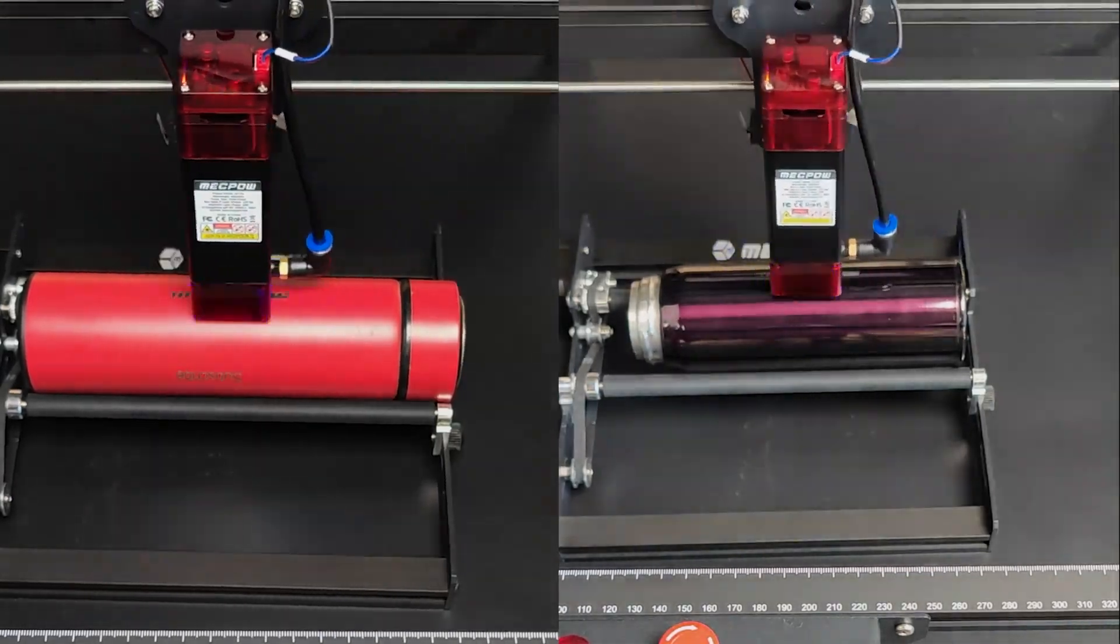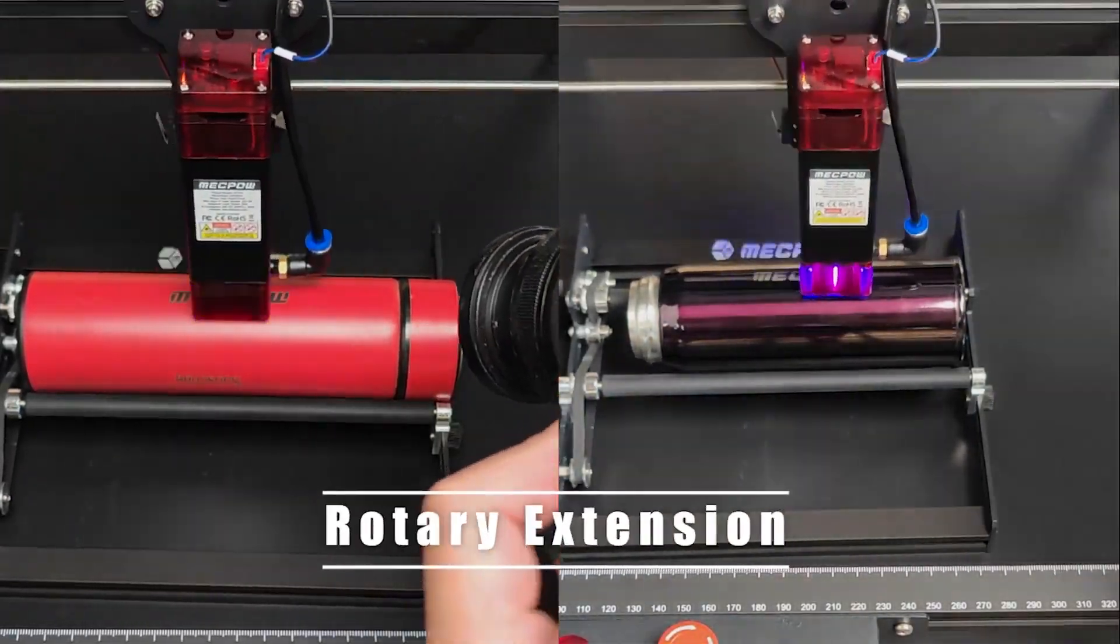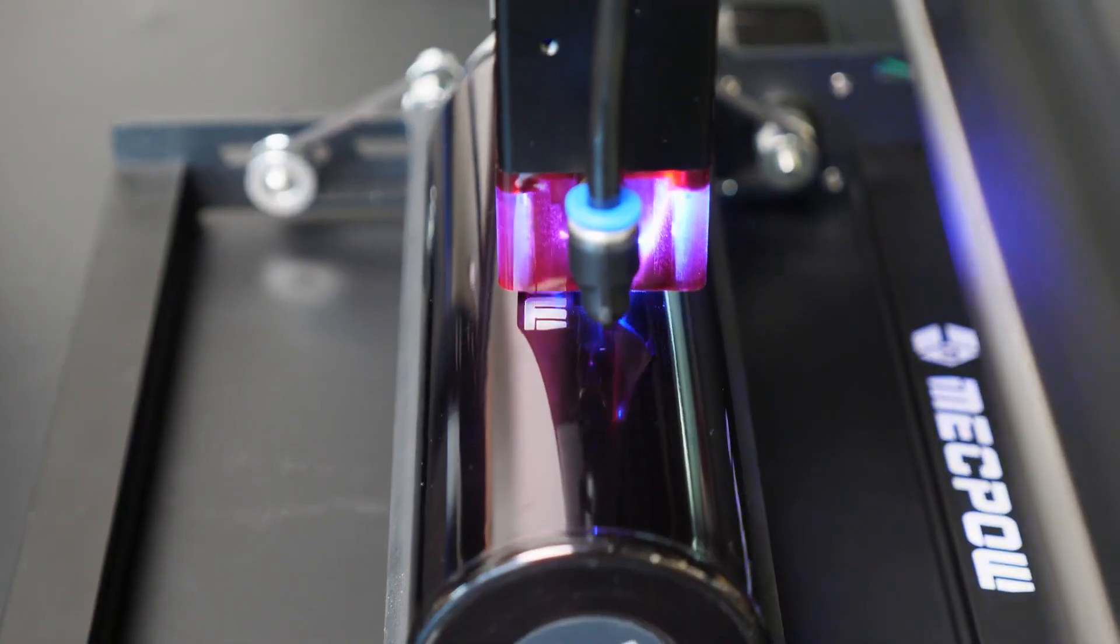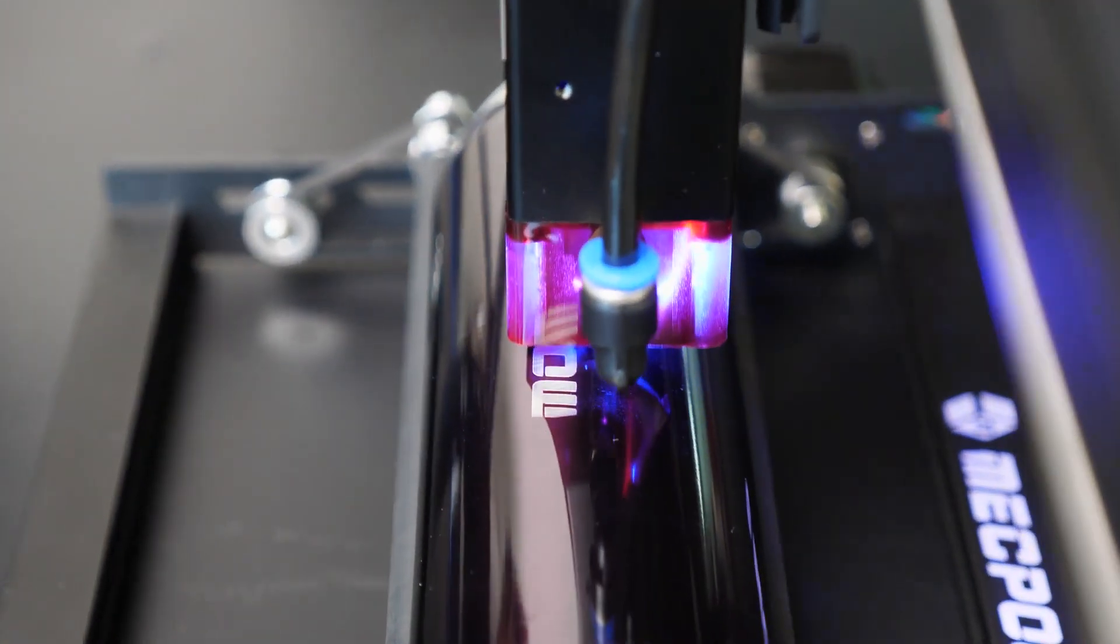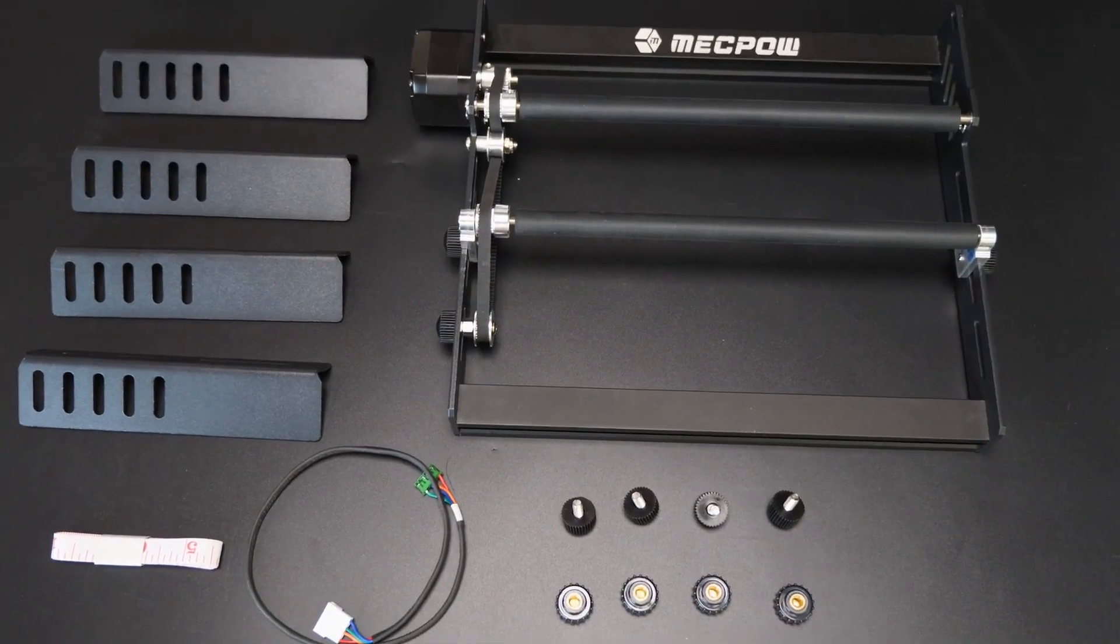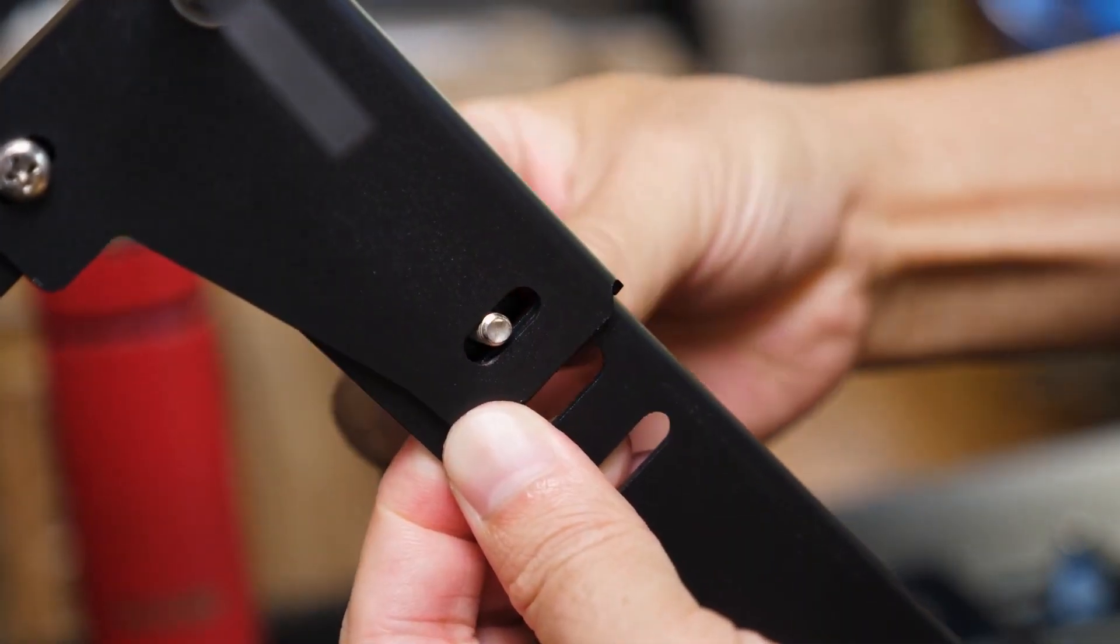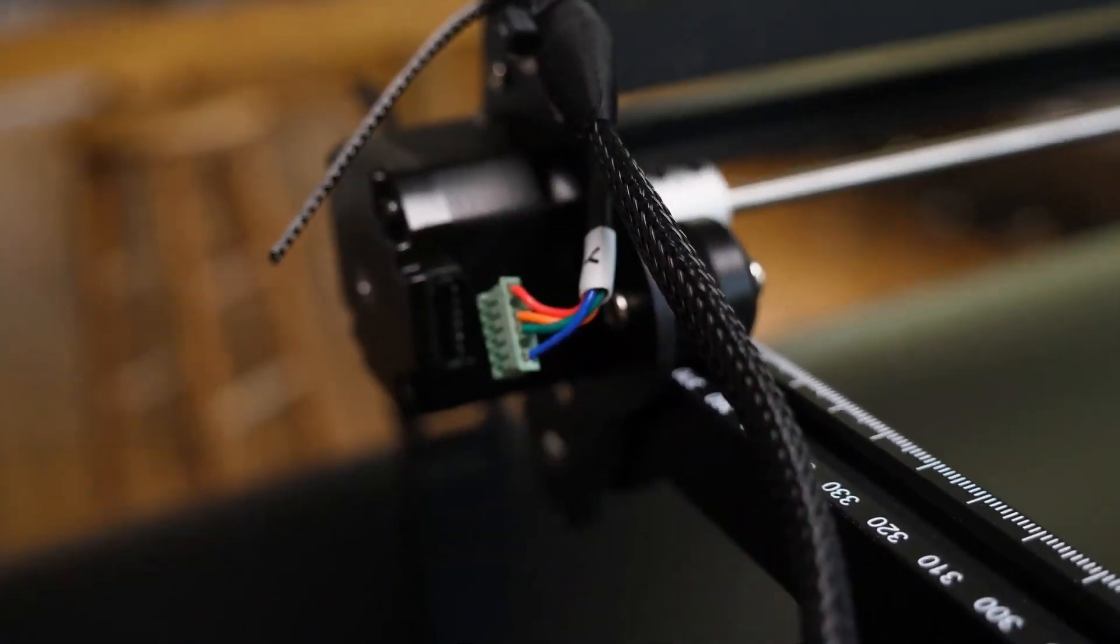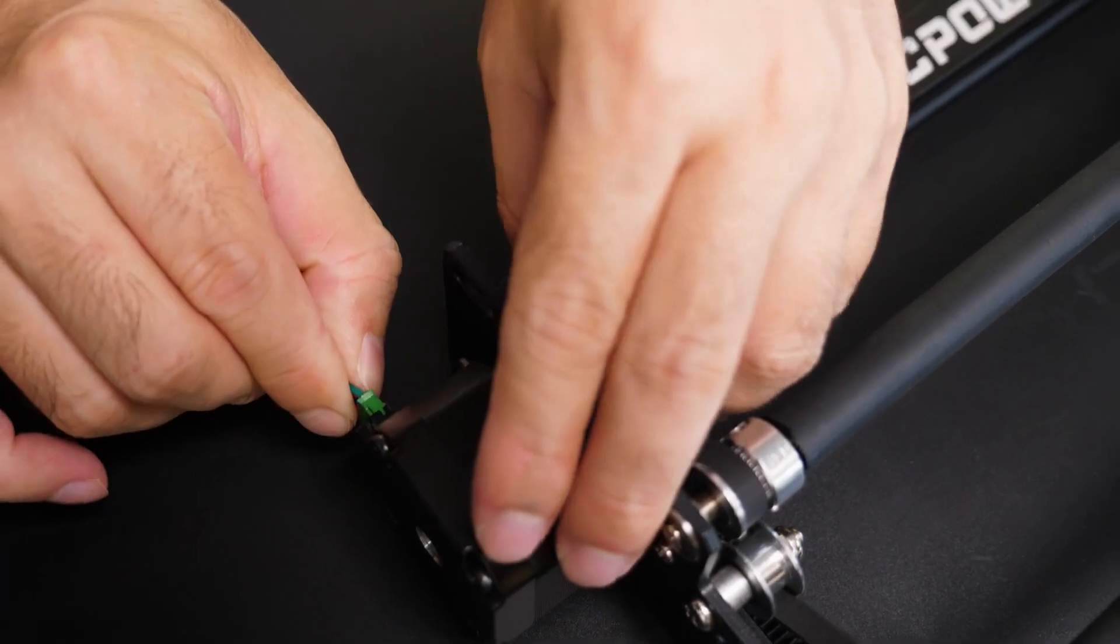There are a couple of notable accessories worth mentioning. First is the rotary extension, which you need to purchase separately. It's incredibly useful when it comes to engraving cylindrical objects. Here's what's included with the rotary extension. To use it, you'll need to lift the laser engraver slightly depending on the object you're engraving. Then you simply replace the cable for the Y-axis, and that's it.